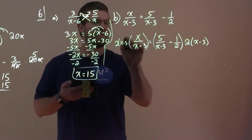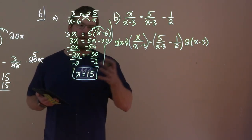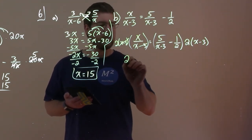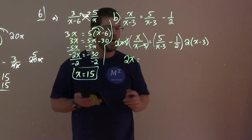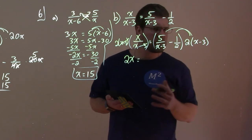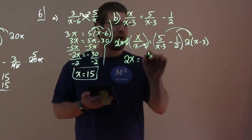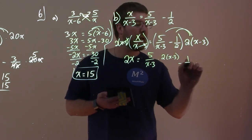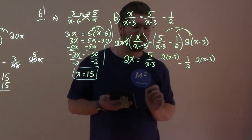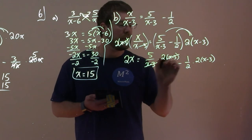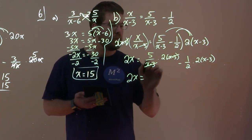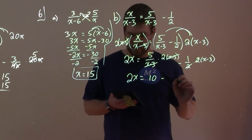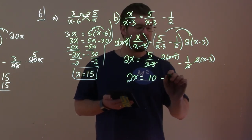We multiply through by 2 times x minus 3. On the left-hand side, x minus 3 cancels and we're left with 2x. On the right side, we distribute: 5 over x minus 3 times 2(x minus 3) minus 1 half times 2(x minus 3). The x minus 3's cancel leaving 5 times 2 which is 10, and the 1 half times 2 cancels leaving minus x minus 3.